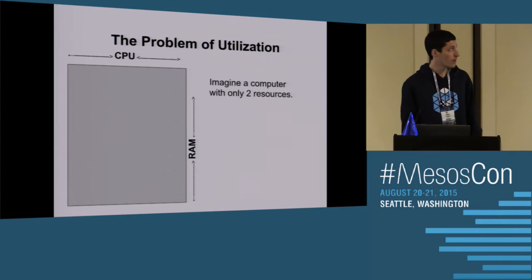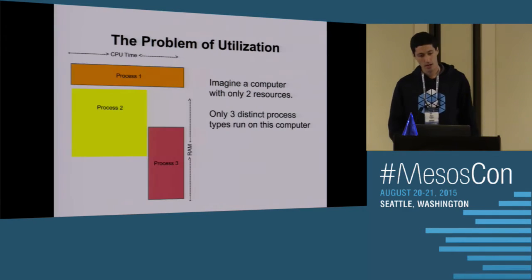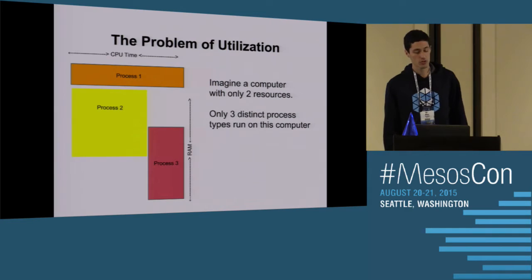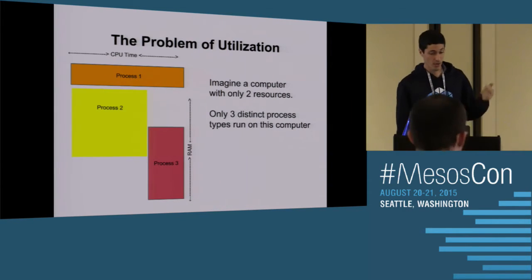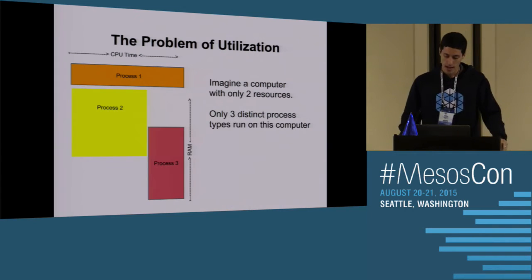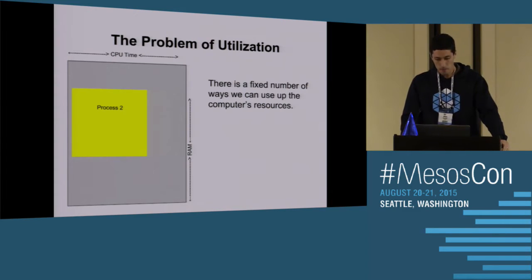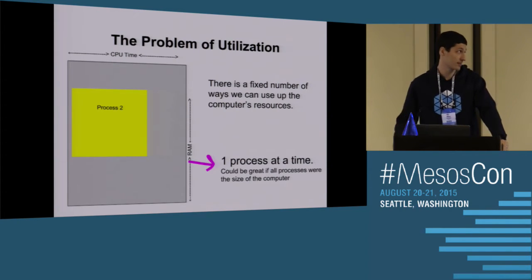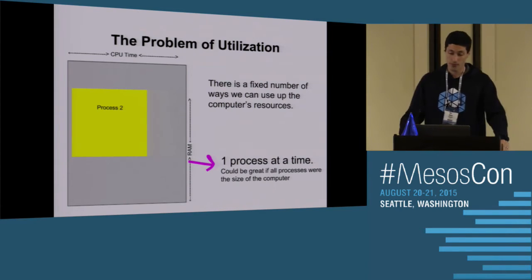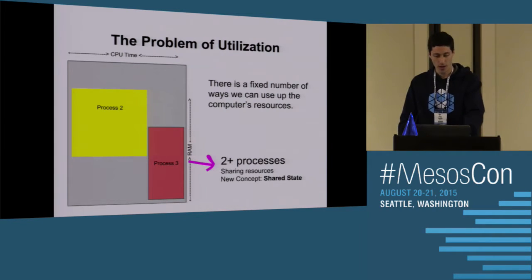If you imagine a two-dimensional computer — just CPU and RAM — and only three types of processes run on it: process one uses a ton of CPU but little RAM, process two uses a different amount, process three uses a different amount. We could do one process at a time, which works great if all processes were the size of the computer. However, process two is too small, or the machine is too big, so we have a lot of gray that's underutilized.